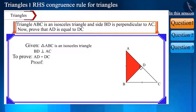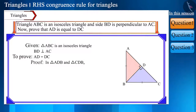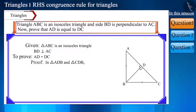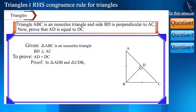Friends, if we prove that triangle ADB is congruent to triangle CDB, then the corresponding sides of congruent triangles are congruent. So side AD will equal side DC. Our aim is to prove that these two triangles are congruent. Let's see how to do that.